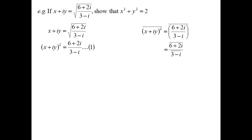So the conjugate of x plus iy squared must be the conjugate of 6 plus 2i on 3 minus i, which I know, division, I could do it individually. So I'll rewrite that.